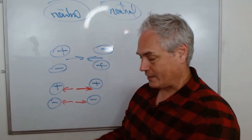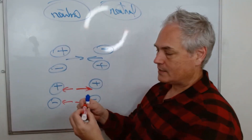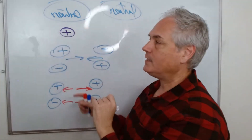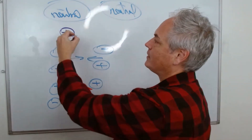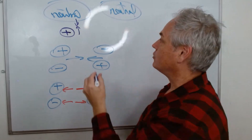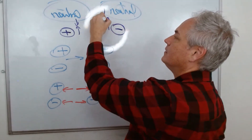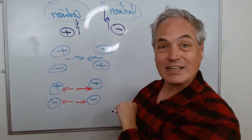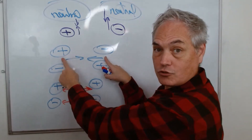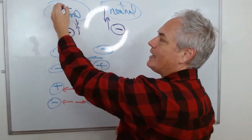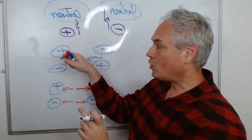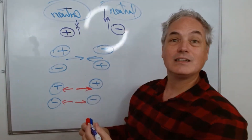That brings us to the question: what happens when a neutral object is involved? If you have a positive object and a neutral object, they will attract because they have opposite charge. Similarly, a negative object will attract a neutral object. The strongest attraction is still between opposite charges, but a charged object and a neutral object will also attract, just more weakly.